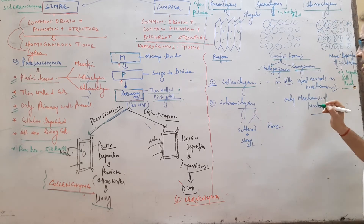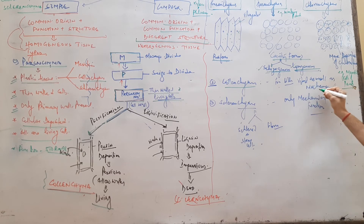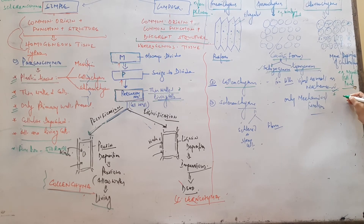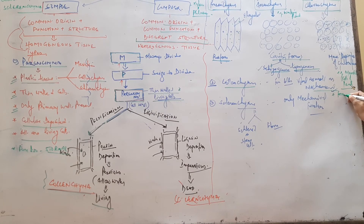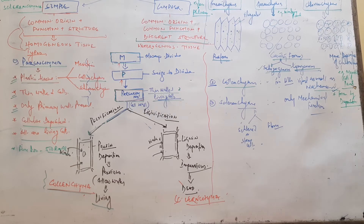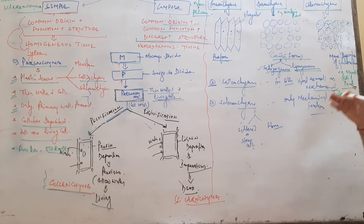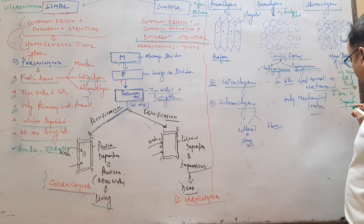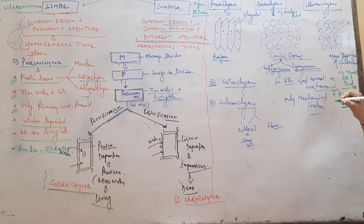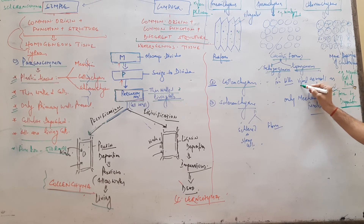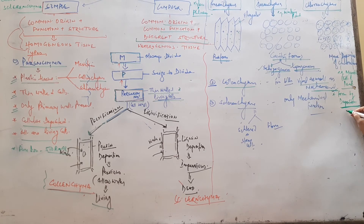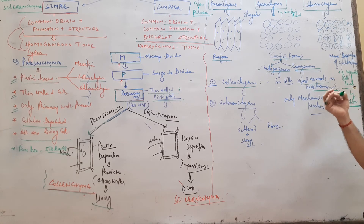Colenchyma has both vital and mechanical functions. It is formed by the deposition of pectin. The deposition may be angular, rectangular, or lacunate type, giving rise to angular colenchyma, lacunate colenchyma, and rectangular colenchyma. In the angular type there is no gap present. Colenchyma has both vital and mechanical functions and is a pervious layer, mainly present in the hypodermis region of the plant.